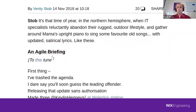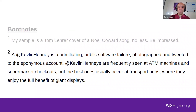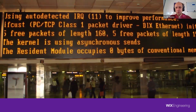This is where I introduce myself again, because it turns out I am a thing. A 'Kevlin Henney' — as used at The Register a couple of years ago — is a humiliating public software failure, photographed and tweeted to the offending company's account. Kevlin Hennies are frequently seen at ATM machines, supermarket checkouts, but the best ones usually occur at transport hubs where they enjoy the full benefit of giant displays.